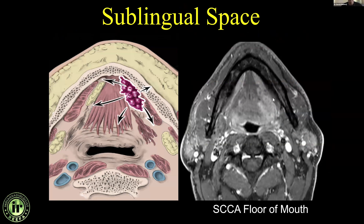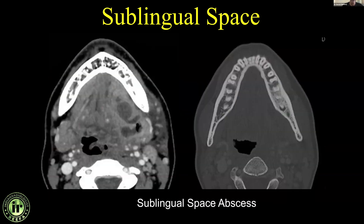This is a classic example of an aggressive mass involving the floor of the mouth. It's non-specific — this could be squamous cell carcinoma or a minor salivary gland tumor — but because squamous cell carcinomas comprise about 95% of tumors, that's where I'd put my money. Here's an example of a floor of mouth abscess, a sublingual space abscess, medial to the mylohyoid muscle.